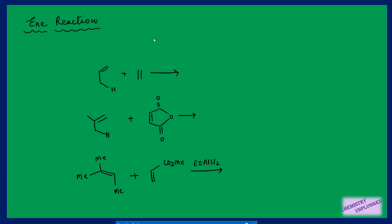Hello friends, welcome back to my channel. Today we will study the Ene reaction and its important properties, with various examples. This reaction is very important. The Ene reaction occurs between an ene and an enophile — it is very similar to the Diels-Alder reaction, where we have diene and dienophile. Similarly, here we have ene and enophile.